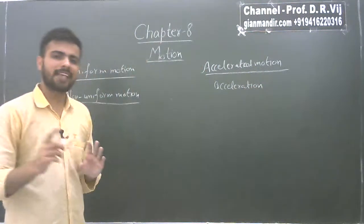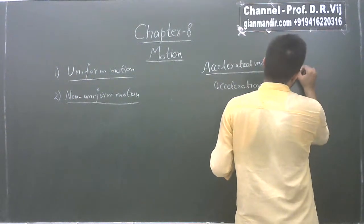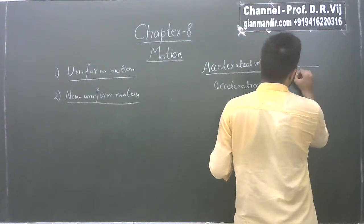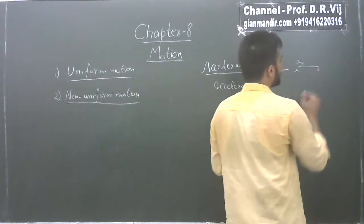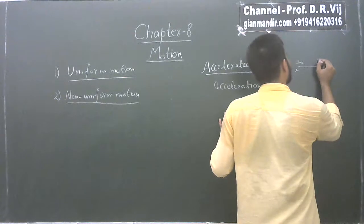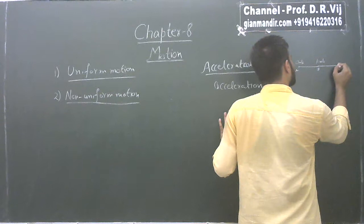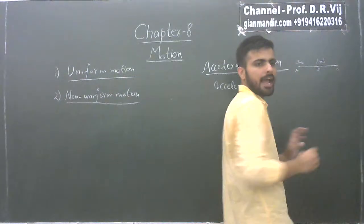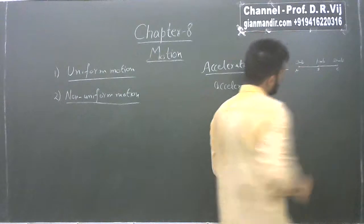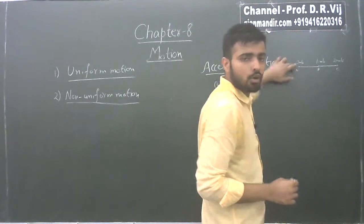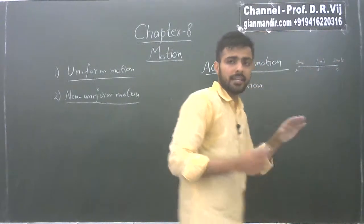What is accelerated motion? Let's take an example. If a body started from A with velocity 0 meters per second, reached B with velocity 10 meters per second, then reached C with velocity 20 meters per second — the velocity of this object is increasing, so the body is accelerating.